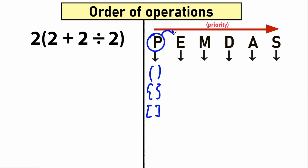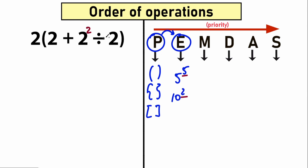After parentheses we move forward to the next step. The next step is exponents — we're talking about basic powers. For example, 5 to the power 5, or 10 to the power 2. We need to find powers, for example 2 to the power 2, and evaluate that expression.